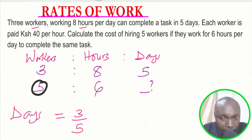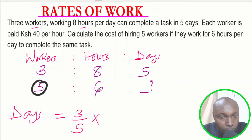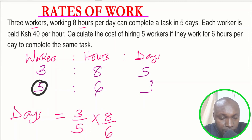Next, we compare the hours with the days. This gives the ratio in which the number of days will increase or decrease based on the hours worked. If they work eight hours a day they take five days, but when the number of hours per day decreases to six, the number of days taken will increase. So the days increase in the ratio eight over six.